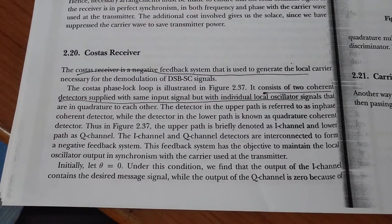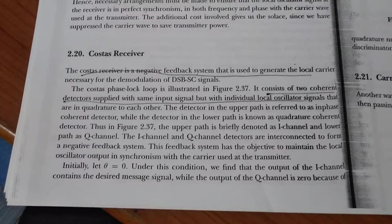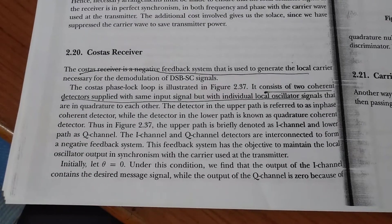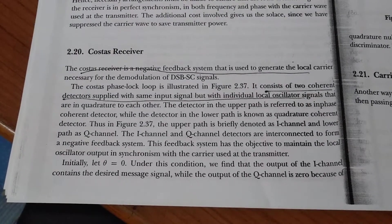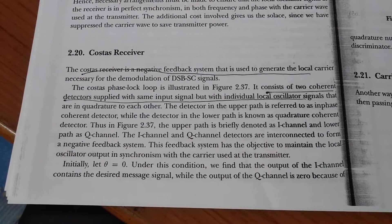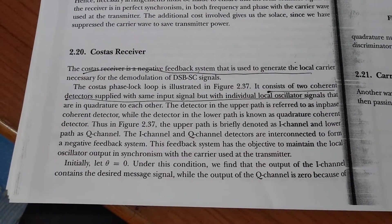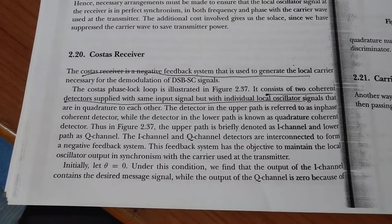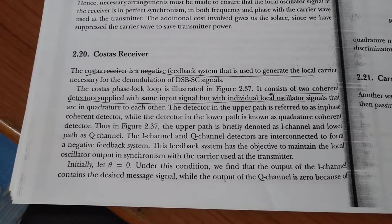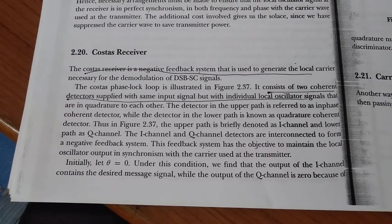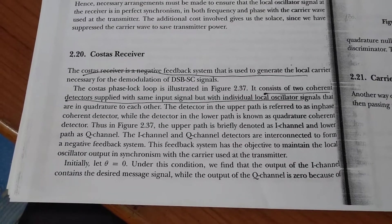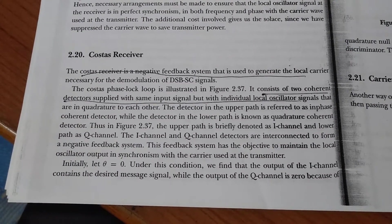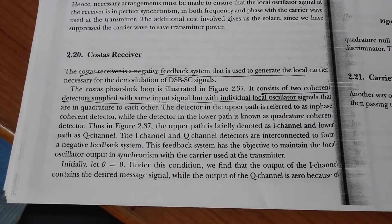The I channel and the Q channel detectors are interconnected to form a negative feedback system. This feedback system has the objective to maintain the local oscillator output in synchrony with the carrier used at the transmitter.